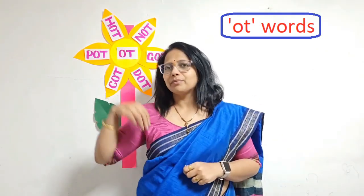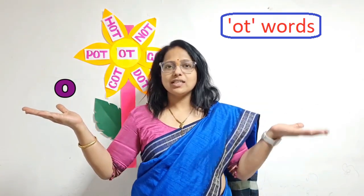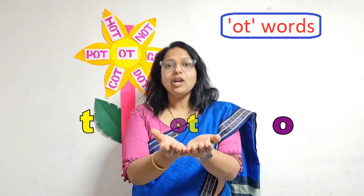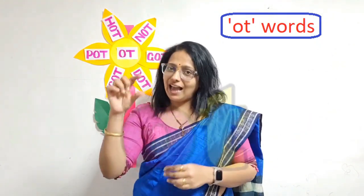Dear children, before we start, let us understand what is ought. O, that is letter O, and T — letter T — comes together and becomes O-T, ought. And we will add a consonant with it, so it will become a three letter ought word. So let us learn three letter ought words. Here we go.